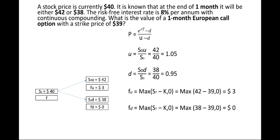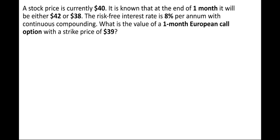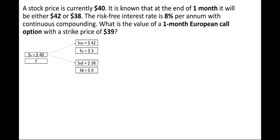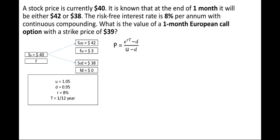Using the following information we calculate p. The binomial tree shows fu, fd, S0u, and S0d. With u = 1.05, d = 0.95, r = 8%, and T = 1/12 years, we plug into the formula e^(rT) − d / (u − d) and solve for p, getting p = 0.5669.